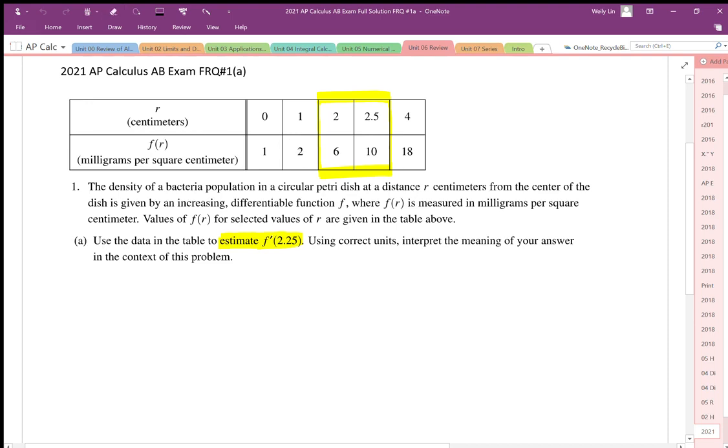In this question, part a asks use the data in the table to estimate f prime at 2.25. Using correct units, interpret the meaning of your answer in the context of this problem.